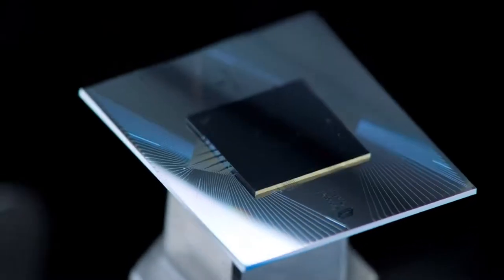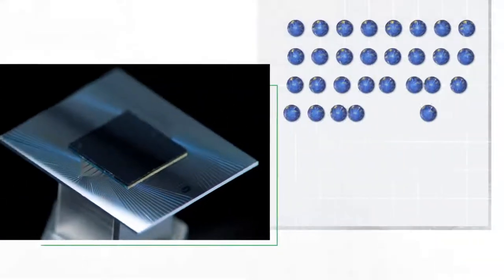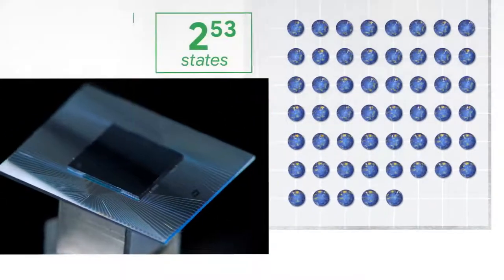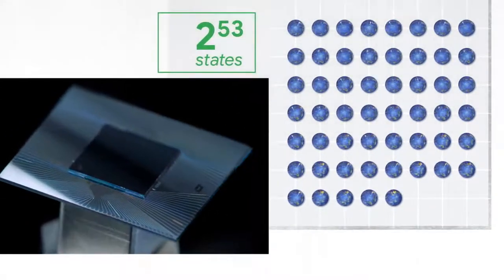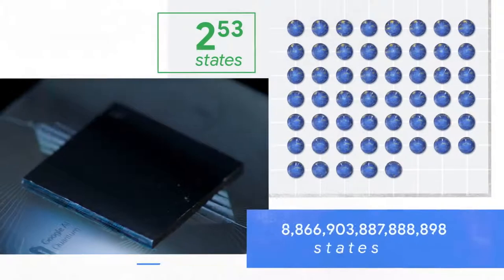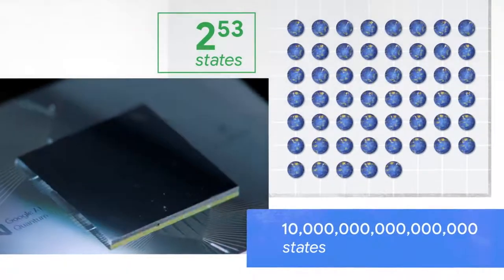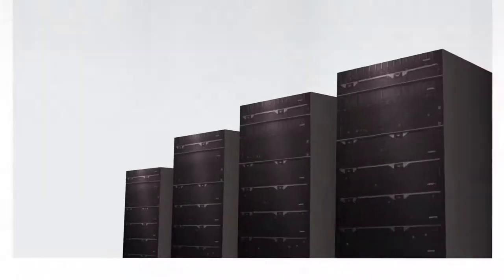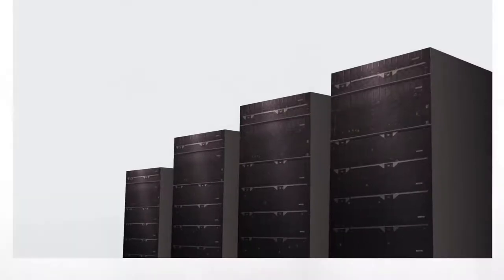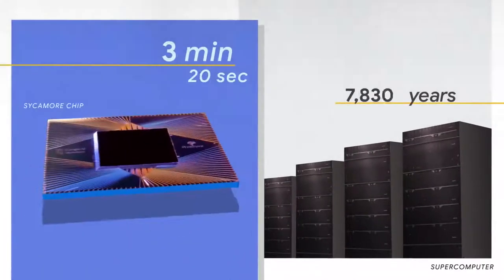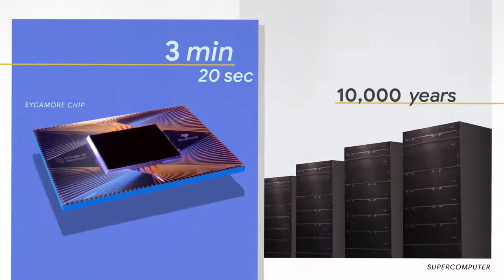The processor that achieved quantum supremacy is called the Sycamore processor. It is performing parallel processing across 2 to the 53 states — that's 10 million billion — and that enormous amount of parallel processing is what gives it its power. When we run small chunks of the computation, it's faster than the largest supercomputer in the world. Our estimate is that it would take thousands of years for a classical computer to complete the full computation.